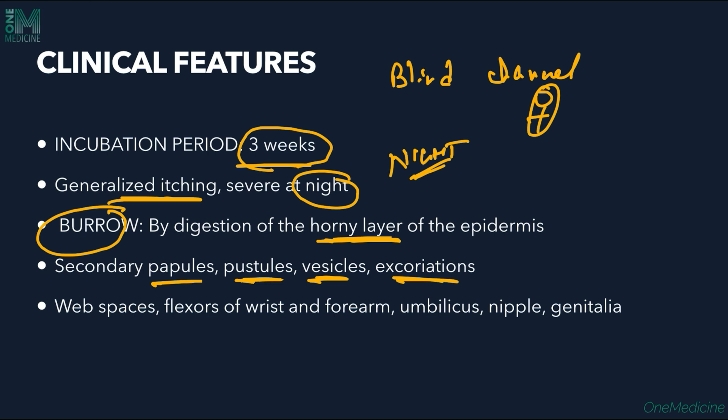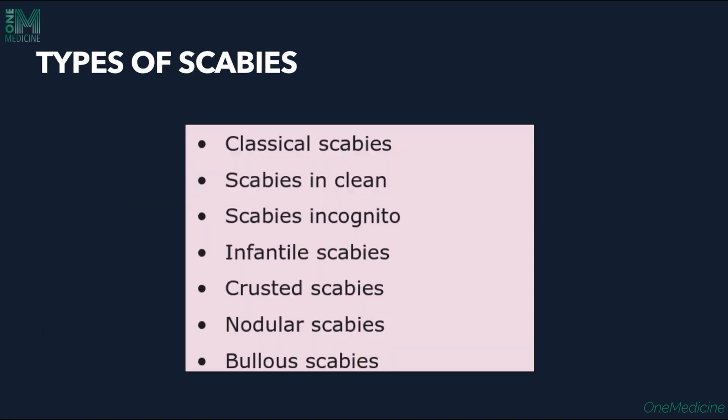The sites involved are the web spaces, the flexors of the wrist and forearm, the umbilicus, the nipple, and the genitalia. This describes classical scabies.